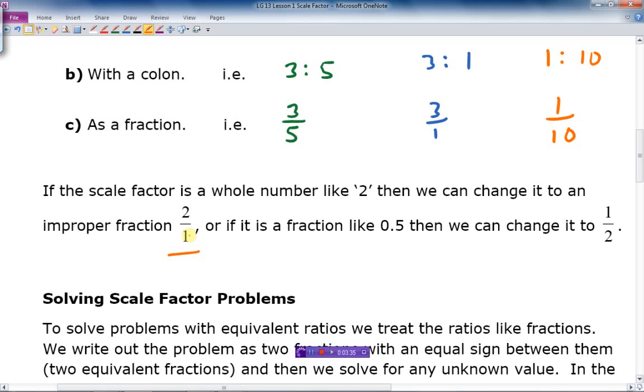Or if it's a decimal, like point five, then we can change it to one to two, because one to two is the same as point five. In other words, point five equals five tenths, which can be reduced to one over two, which is the same as that. We just try to reduce it if possible.